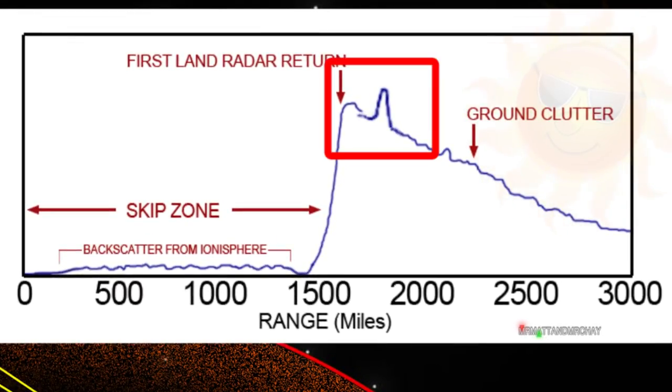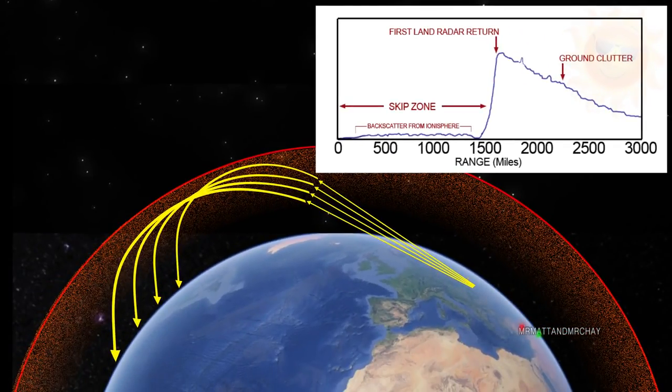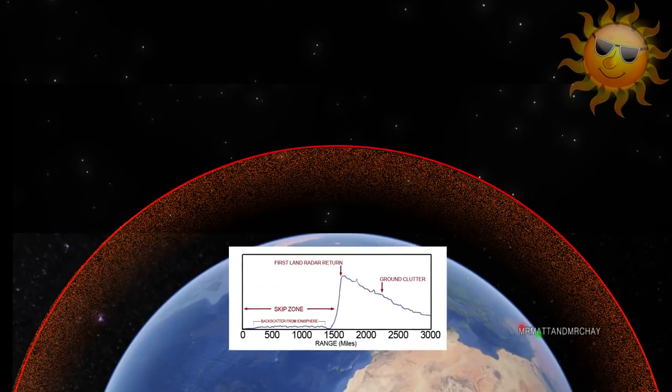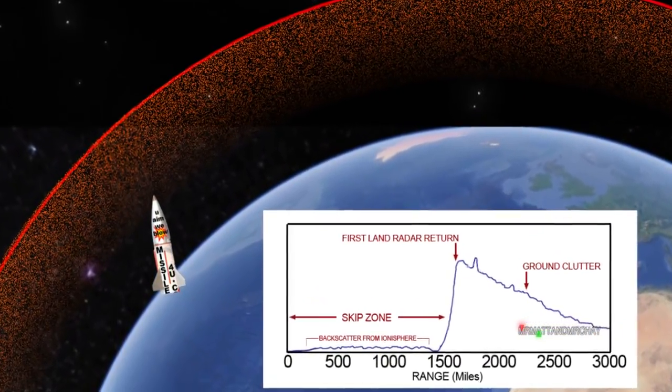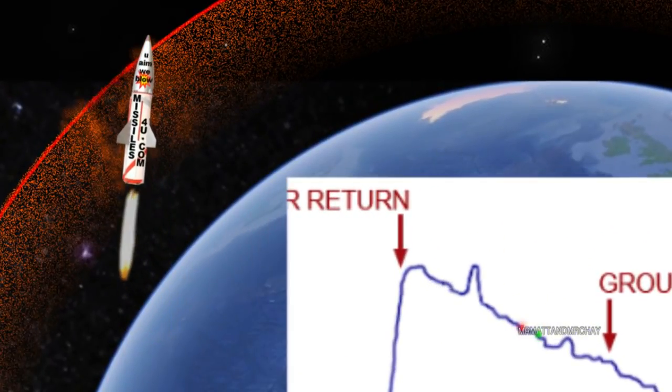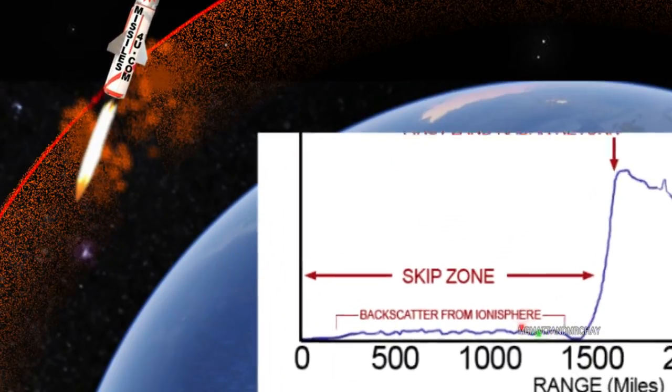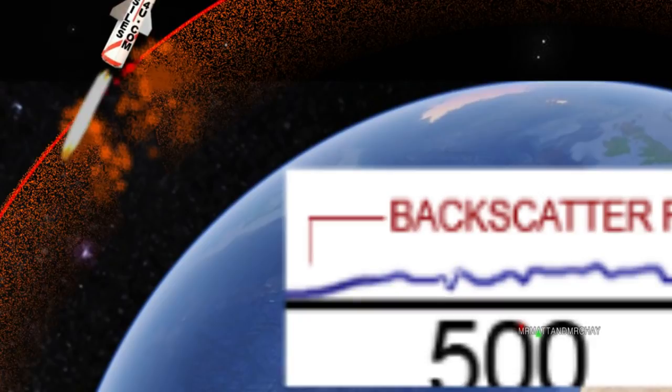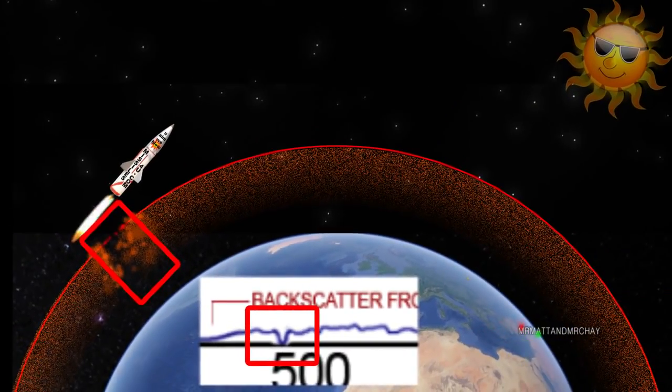If the US did ever launch a ballistic missile towards the east, it would have to travel into space to eventually come down at its target. The missile launch would seriously disturb, or deplete, the ions in the ionosphere. Possibly causing a blank spot, which may be picked up like this.